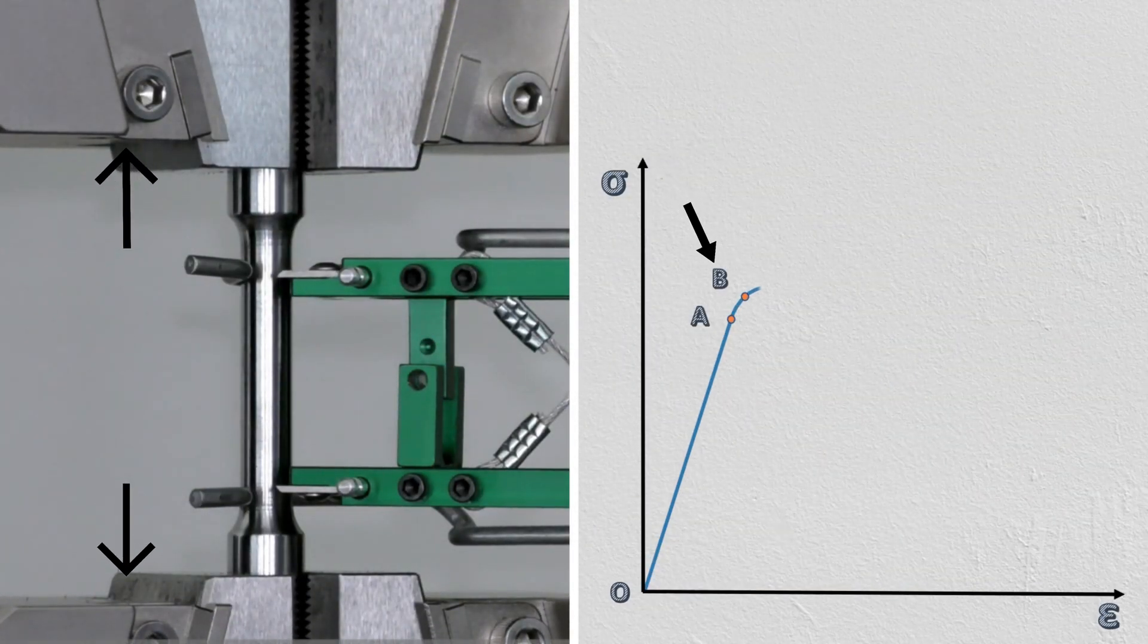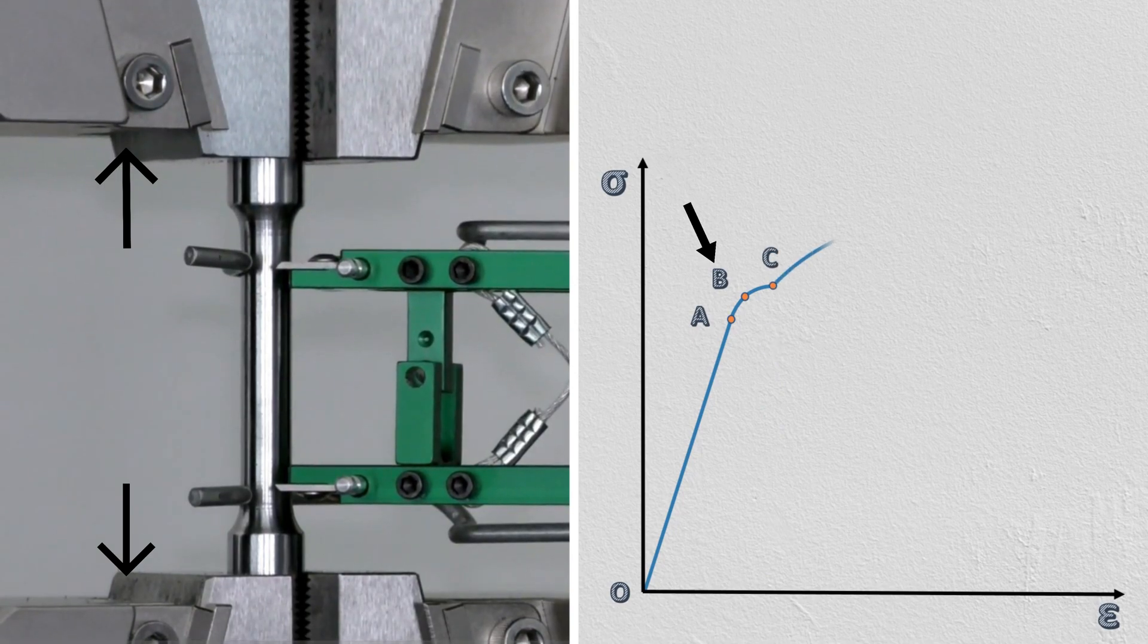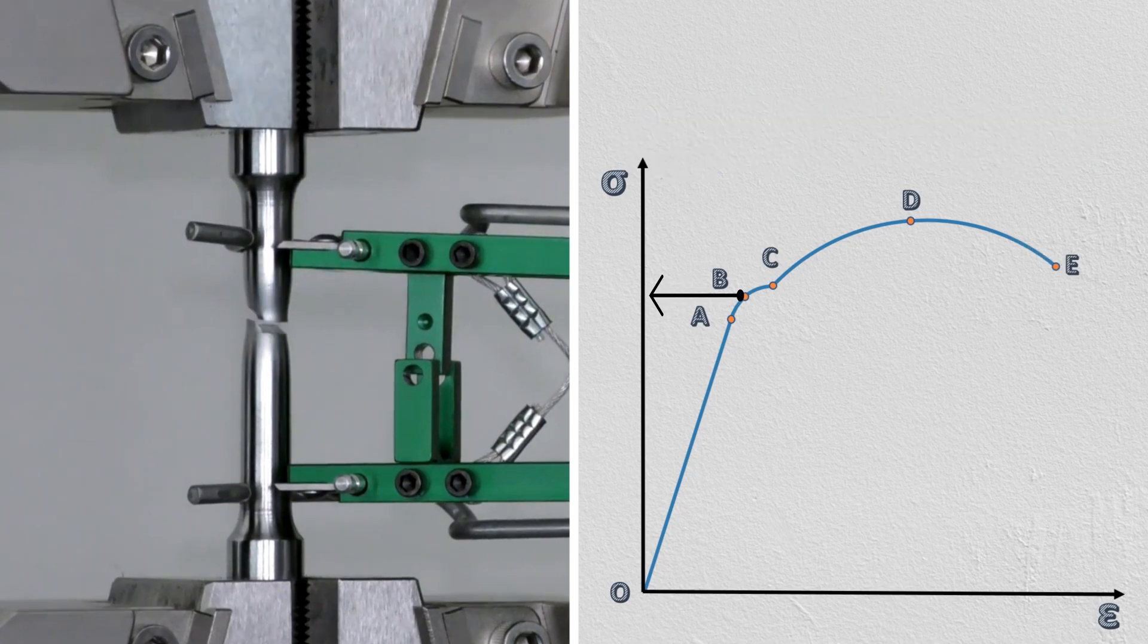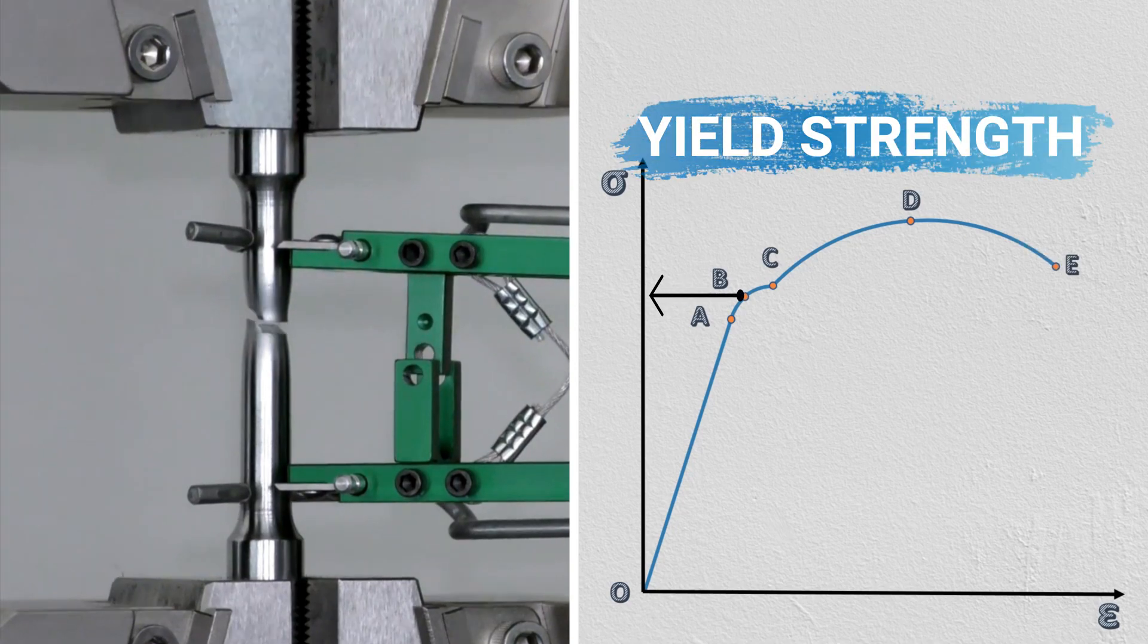The point B on this curve, where material starts to yield, is known as yield point. And stress corresponding to this point is known as yield strength.